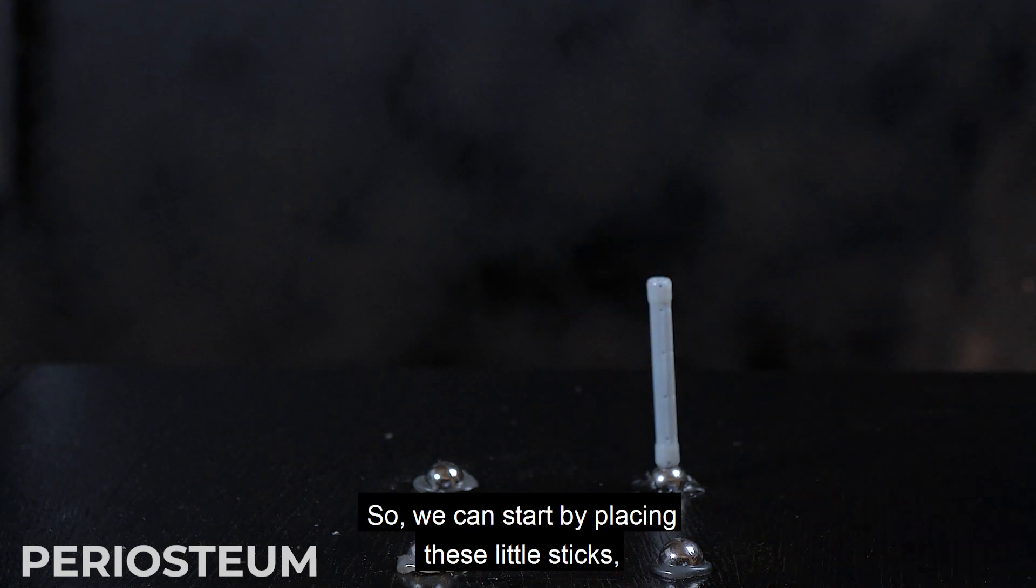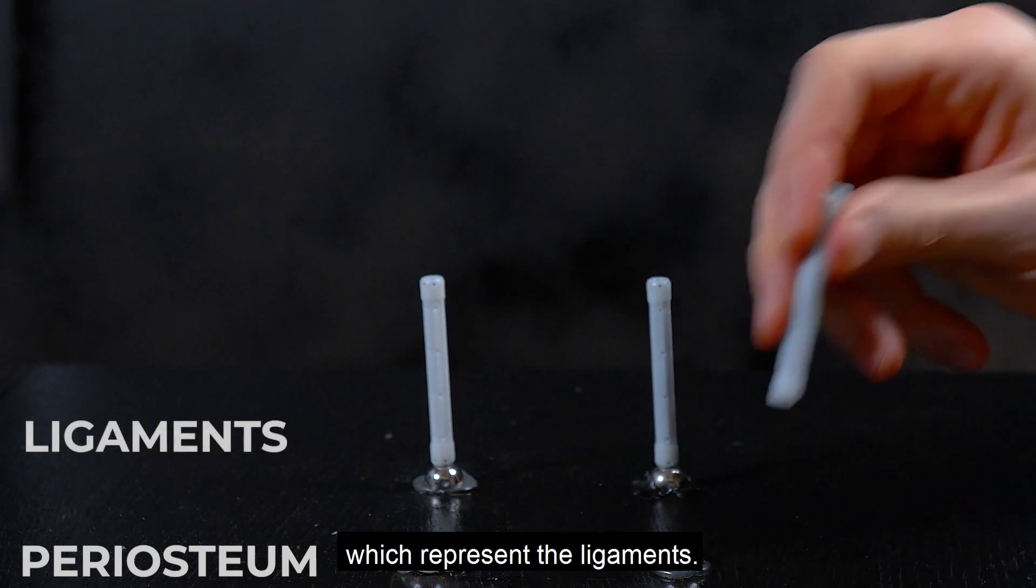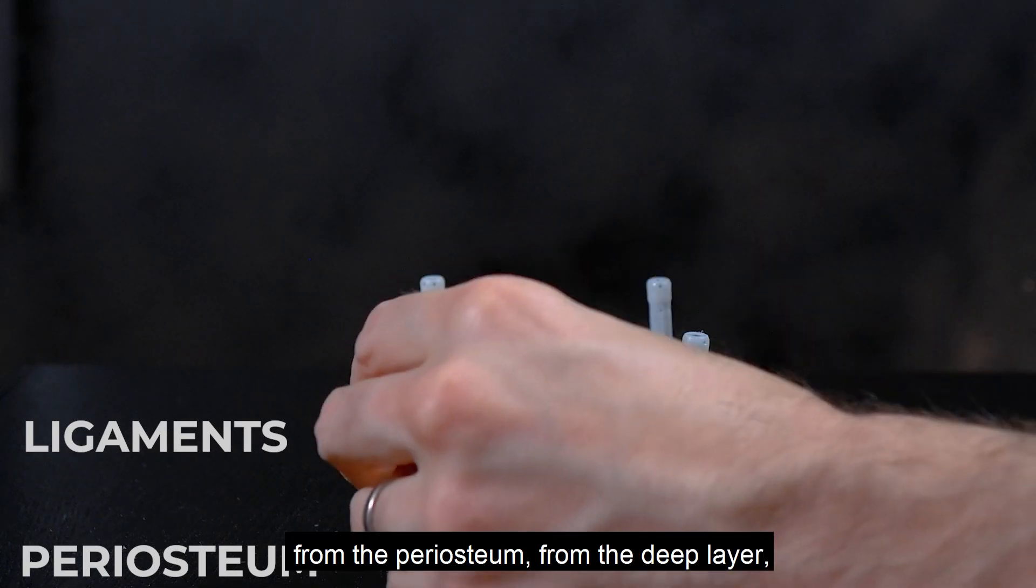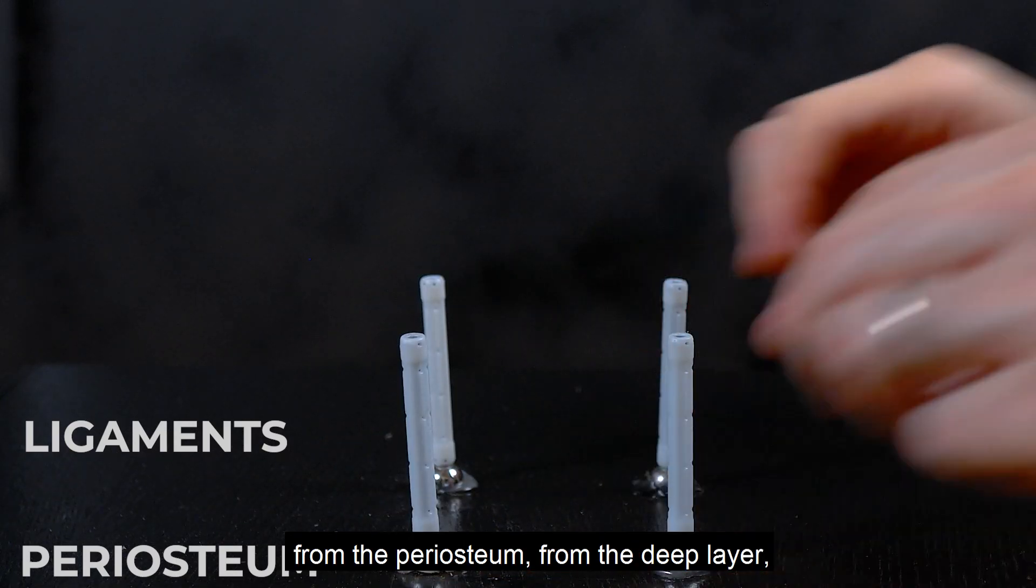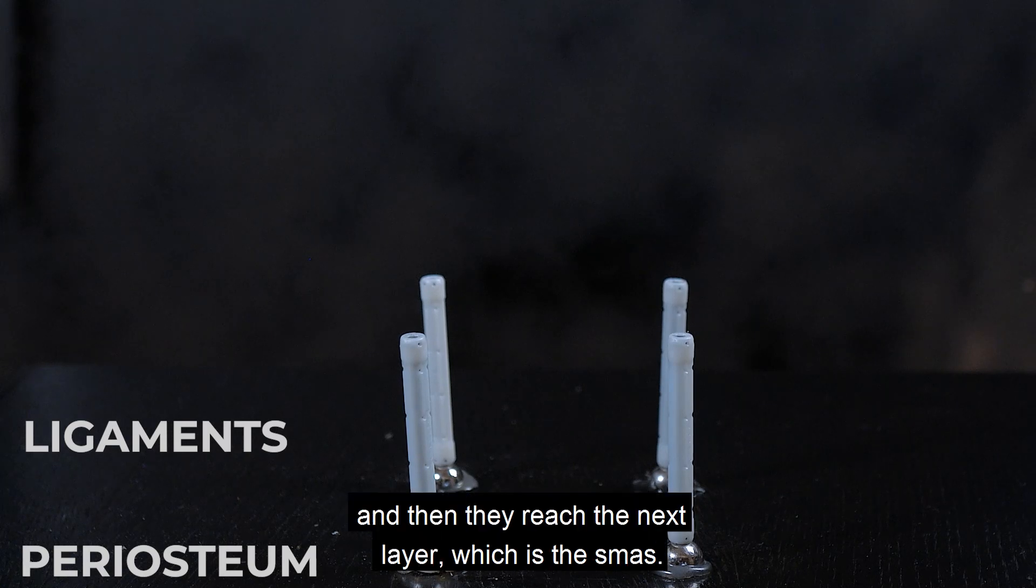We can start by placing these little sticks which represent the ligaments. They run, as you know, from the periosteum, from the deep layer, through the deep fat. And then they reach the next layer which is the SMAS.